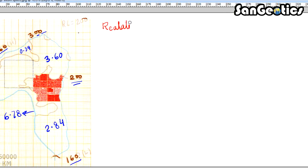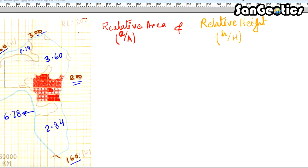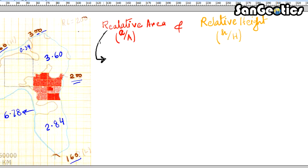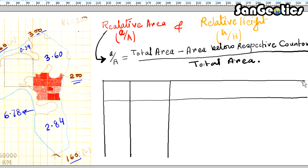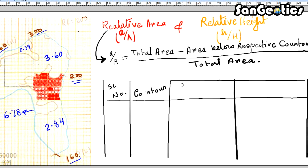Now we calculate relative area (a/A) and relative height (h/H) using the respective formulas. The formula for relative area is: small a divided by capital A equals total area minus area below respective contour, whole divided by total area. We now construct a table for relative area with columns: serial number, contour, area below respective contour, and relative area (a/A).